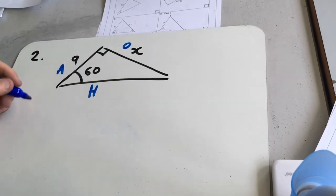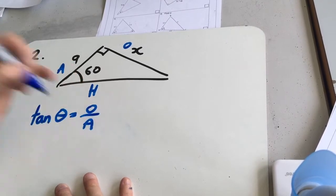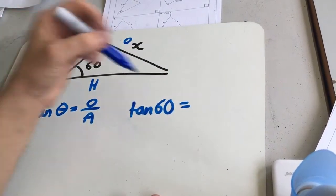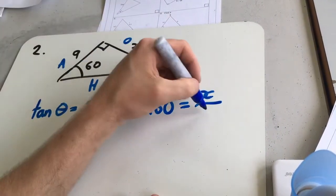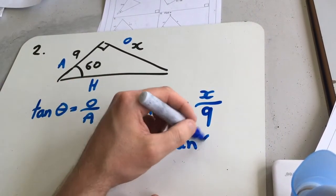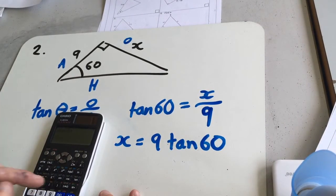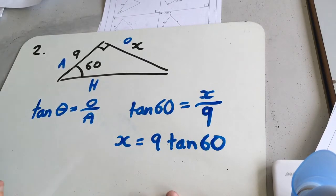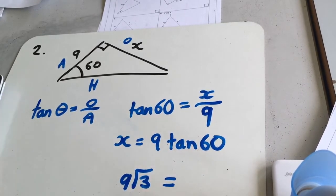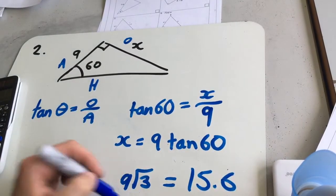So I know tan theta is the opposite over the adjacent. So in this question we get tan of 60 equals x over 9. So we can times that by 9 and say x equals 9 tan 60. Get the calculator out. 9 tan 60. Which gives us a length of 9 root 3, which if you want to work out exactly, is 15.6-ish. But it's quite nice to do it exactly.